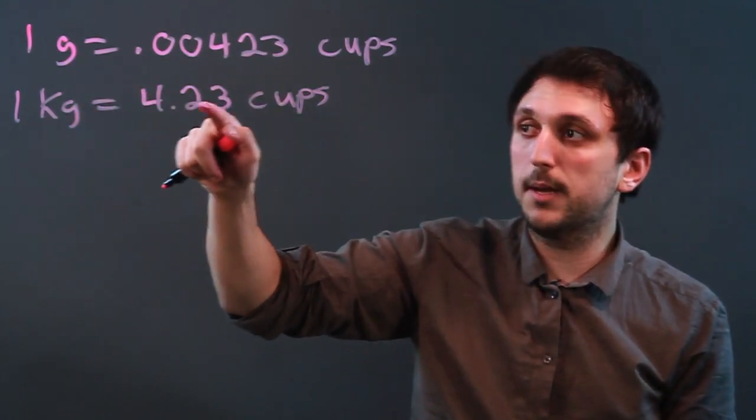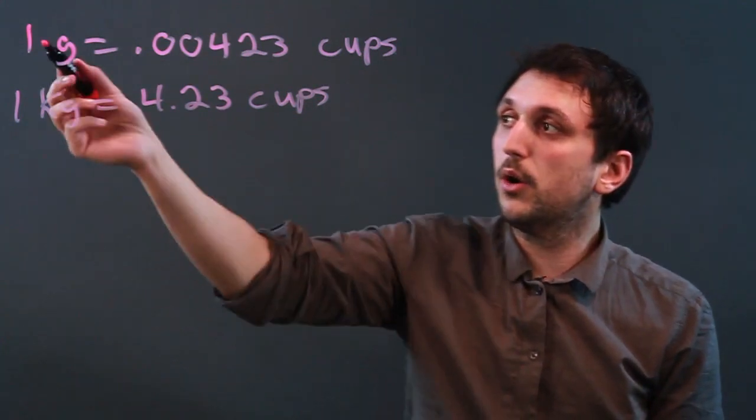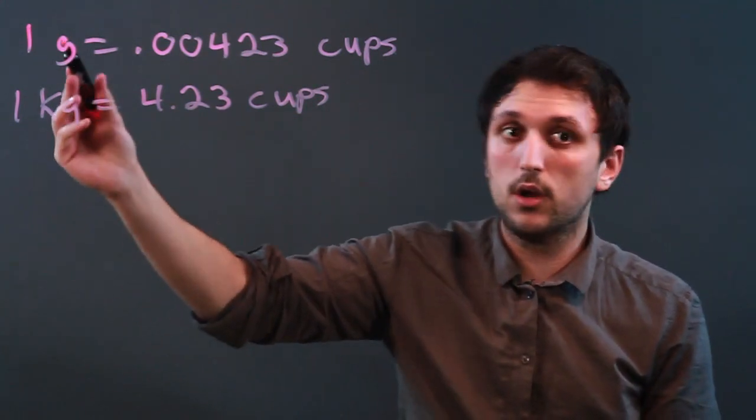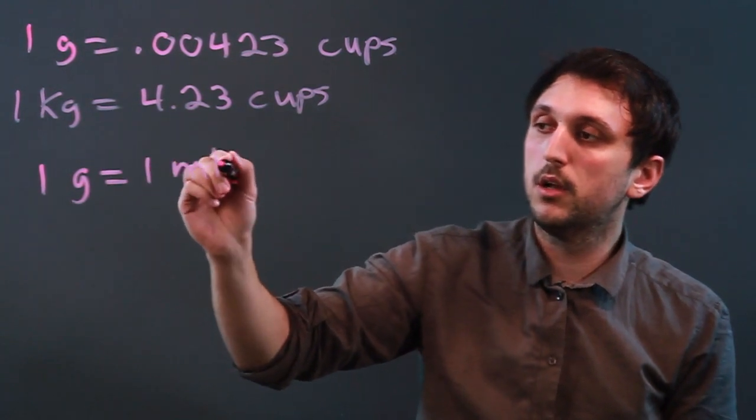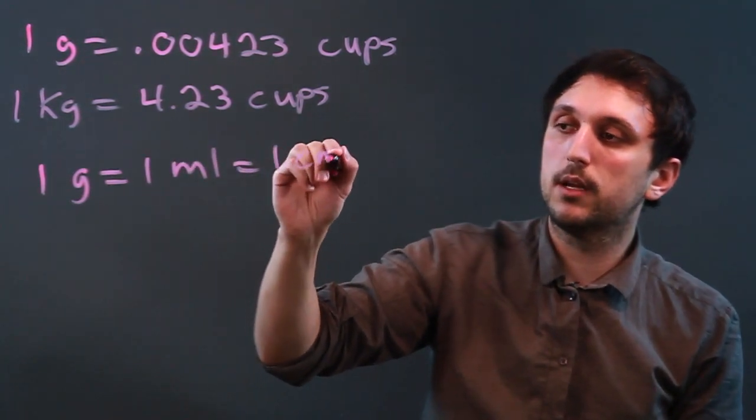So we take this number and we multiply it by a thousand. Now when we're dealing with water, 1 gram equals 1 milliliter, which equals 1 cubic centimeter.